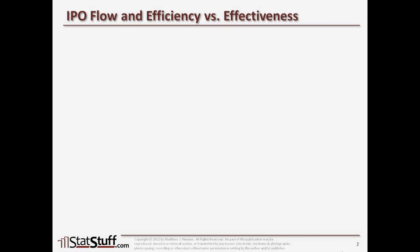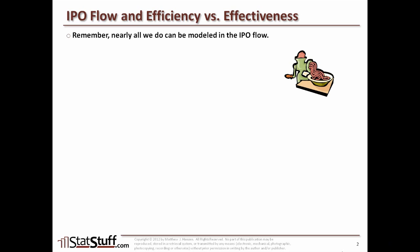Let's briefly review again the IPO model and the differences between efficiency and effectiveness. If you remember from last time, we said that nearly everything that we do can be modeled to the IPO flow model. We used the example of the meat grinder where we said there was some input that goes into it. We apply some sort of process to it and then from that process we have some sort of output — the process is transforming the inputs to create some sort of output.